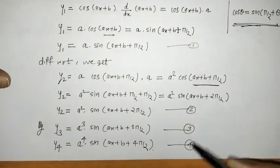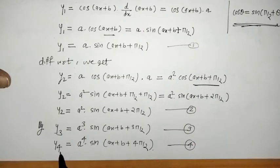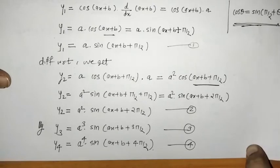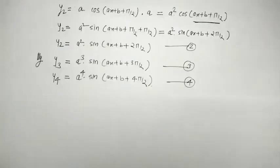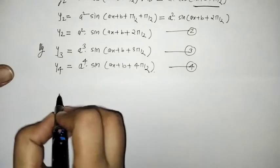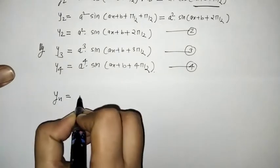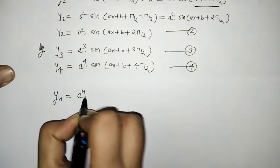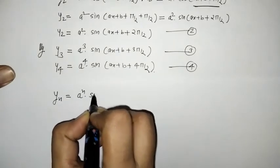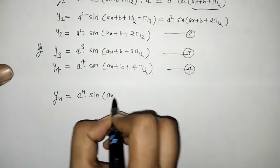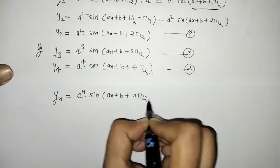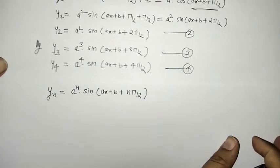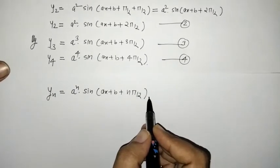From this pattern, we can write the generalization: the nth derivative yn = aⁿ·sin(ax + b + nπ/2), where a and b are constants.